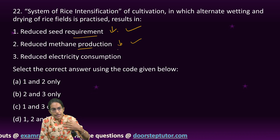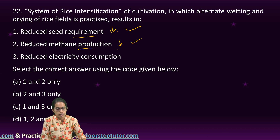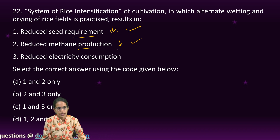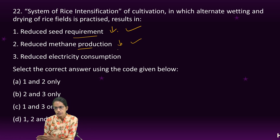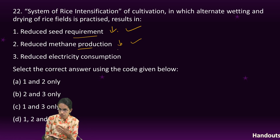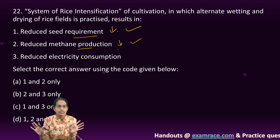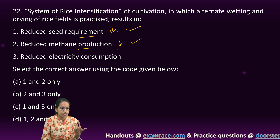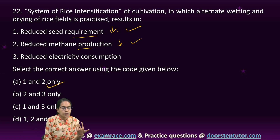Under the System of Rice Intensification, seed requirement could go down from 20 kg per acre to 2 kg per acre. Methane production can be reduced by 50% to 30% according to various studies. India, Vietnam, and Madagascar are among the nations working on it. Alternate wetting and drying of rice fields is practiced, organic manure is a key input, and intermittent square planting patterns are used. So statements one and two are the right options for this question.